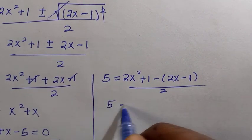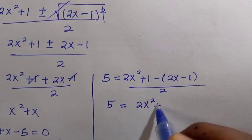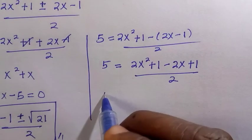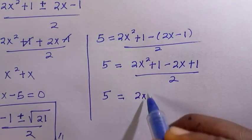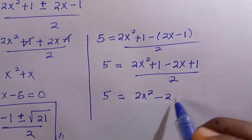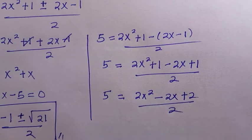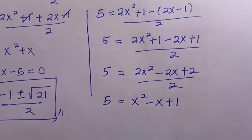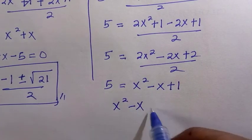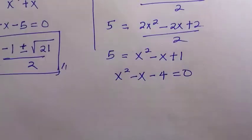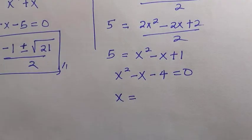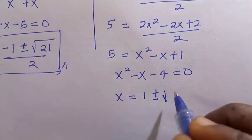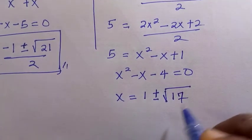For the negative case: 5 equals (2x² + 1 minus (2x minus 1)) divided by 2, which becomes 5 equals (2x² minus 2x plus 2) divided by 2. Factoring out 2 and canceling gives x² minus x plus 1, so rearranging: x² minus x minus 4 equals 0. Solving this quadratic gives x equals 1 plus or minus the square root of 17, divided by 2.